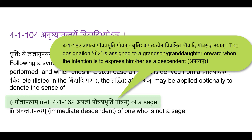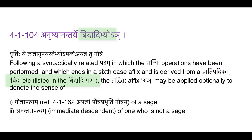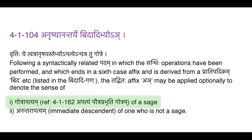Recall what is Gotram — it is defined by sutram 4.1.162: Apatyam Autrapabhruti Gotram. So it is a descendant but not the immediate one; descendant from grandson onwards is called Gotram. The Vidadi Ganaha mentioned in sutram 4.1.104 is a special Ganaha. For those words in this Ganaha where the person denoted is not a sage, the derived form denotes the immediate descendant — Anantarapatyam. For the remaining words which denote the names of sages, it is in the sense of Gotrapatyam.